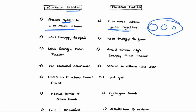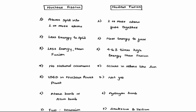Nuclear fission takes less energy to split. Nuclear fusion takes more energy to fuse, but the energy obtained after fusion is also more — nuclear fusion gives four to five times higher energy compared to fission. Nuclear fission doesn't naturally occur, but nuclear fusion does — the reaction going on in the sun is nuclear fusion.